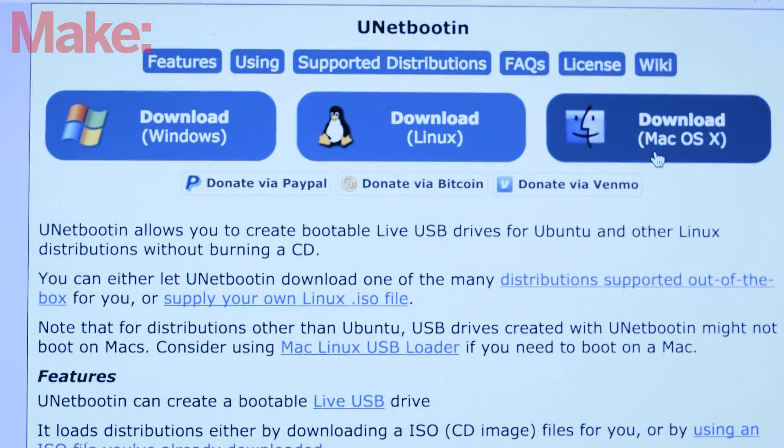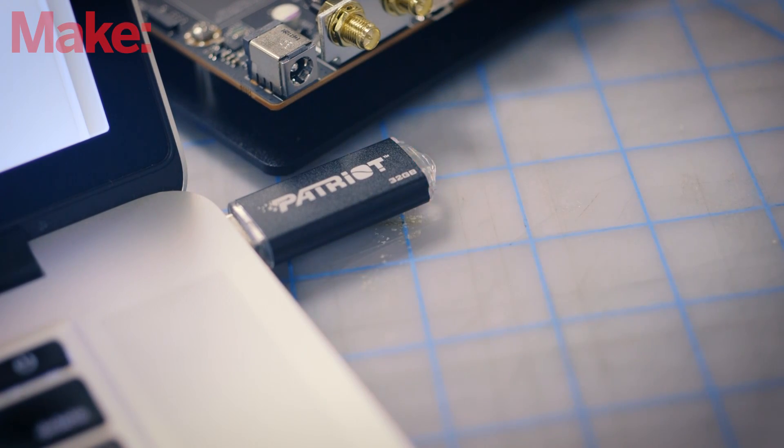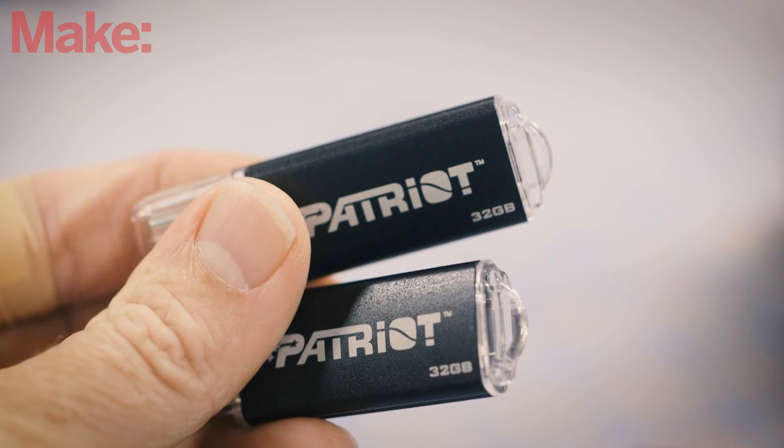We'll download the utility UNetBootin that makes this bootable USB stick for us. We'll also need the hard drive image that we're going to clone onto a second flash drive.